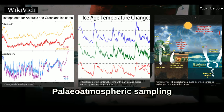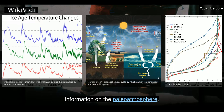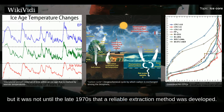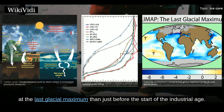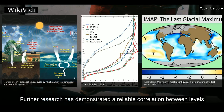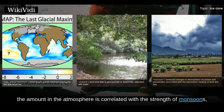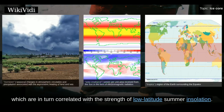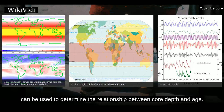It was understood in the 1960s that analyzing the air trapped in ice cores would provide useful information on the paleoatmosphere, but it was not until the late 1970s that a reliable extraction method was developed. Early results included a demonstration that CO₂ concentration was 30% less at the last glacial maximum than just before the start of the industrial age. Further research has demonstrated a reliable correlation between CO₂ levels and temperature calculated from ice isotope data. Because methane is produced in lakes and wetlands, its amount in the atmosphere is correlated with the strength of monsoons, which are in turn correlated with low-latitude summer insolation. Since insolation depends on orbital cycles for which a timescale is available from other sources, methane can be used to determine the relationship between core depth and age.